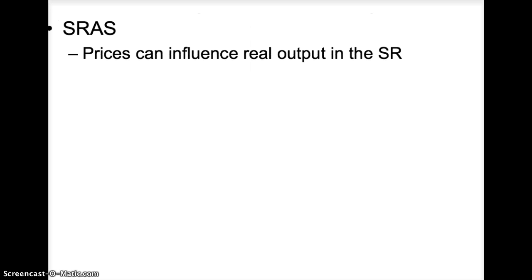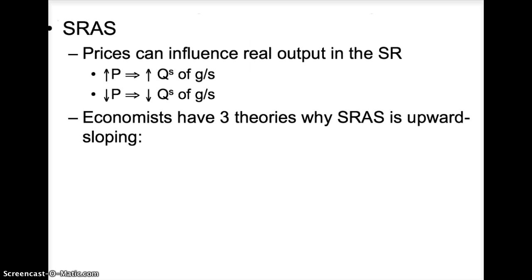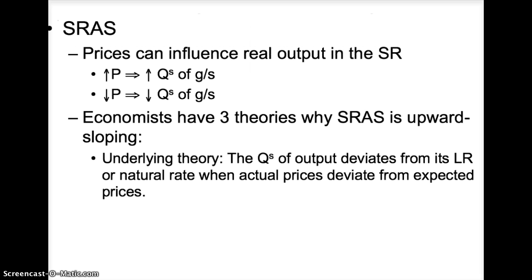The short-run aggregate supply curve is much different than the long-run curve. In the short run, prices can influence real output because monetary neutrality breaks down. When prices increase, the quantity supplied of goods and services increases; when prices decrease, quantity supplied decreases — a positive relationship. The underlying theory is that the quantity supplied deviates from its natural rate when actual prices deviate from expected prices. Since firms make expectations about the future, differences between expectations and actual prices can alter their level of production.